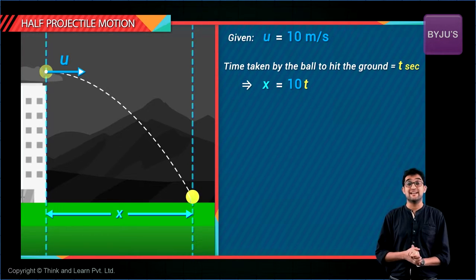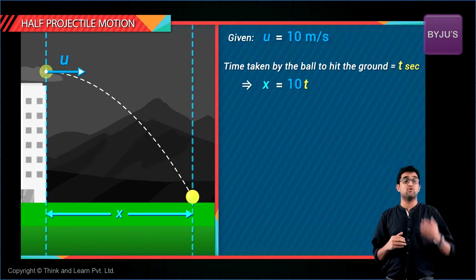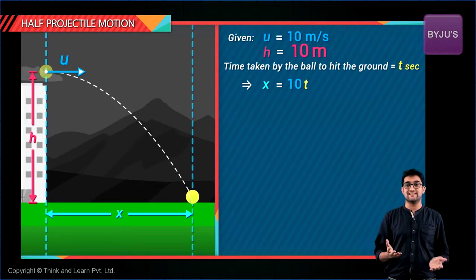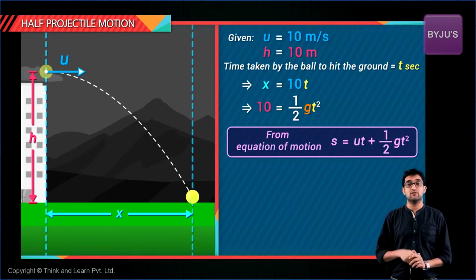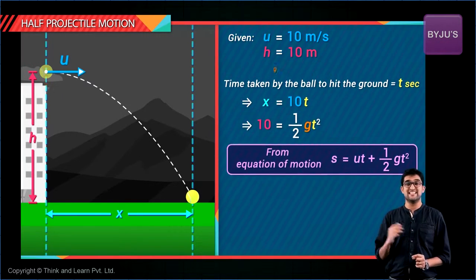x will be equal to 10 into t. What about the vertical distance? It's already given as 10 meters right, so 10 meters will be equal to half into g into t square, g is 10 meter